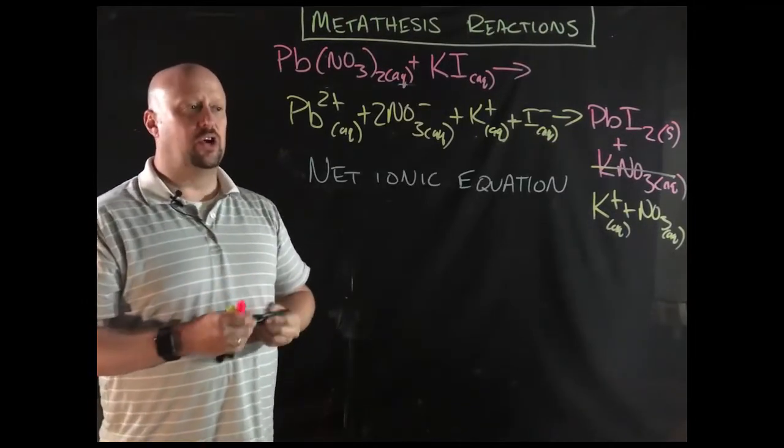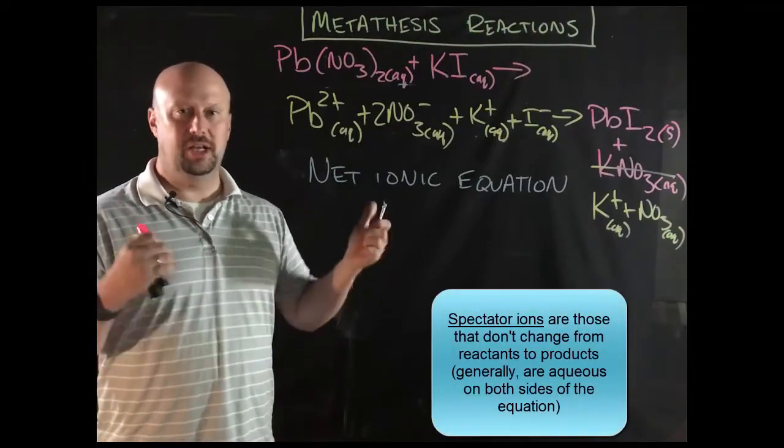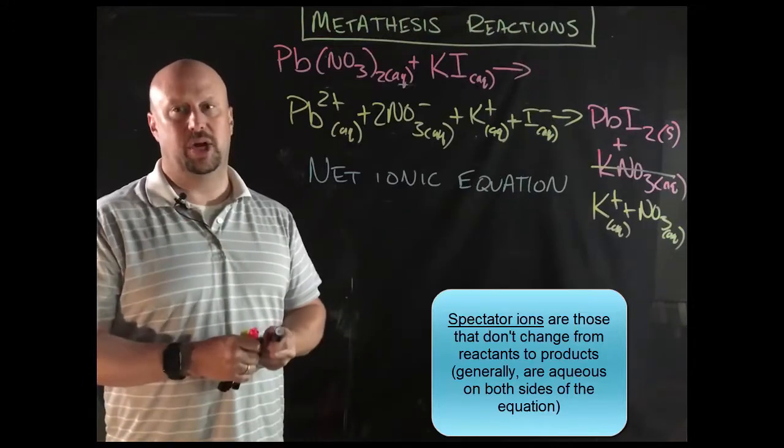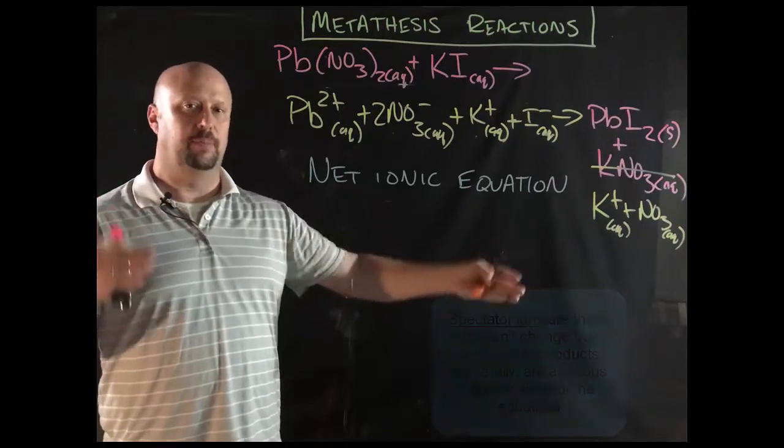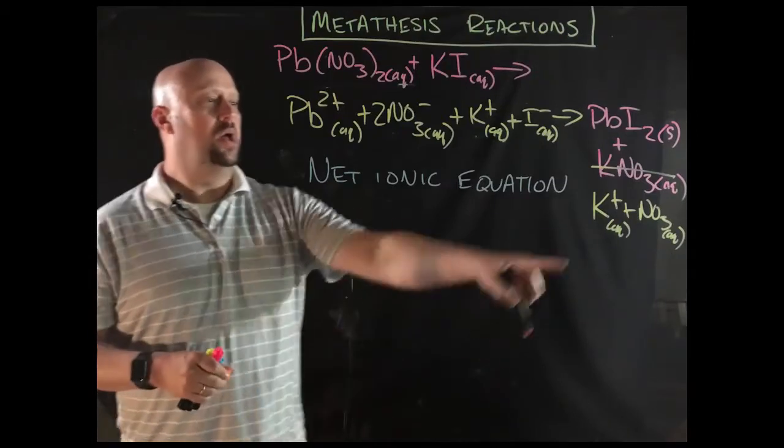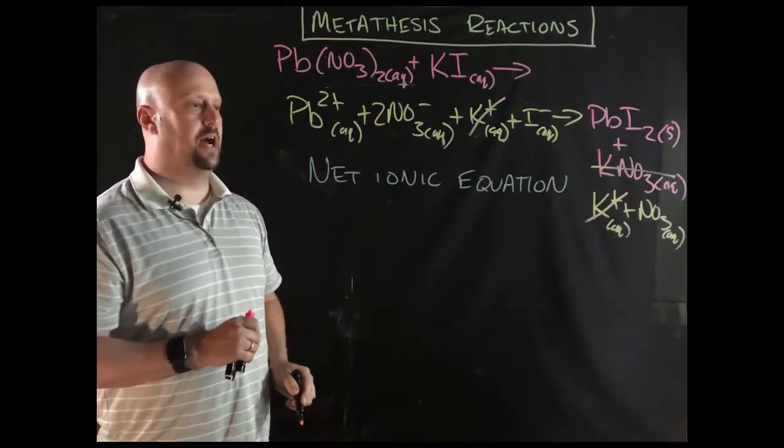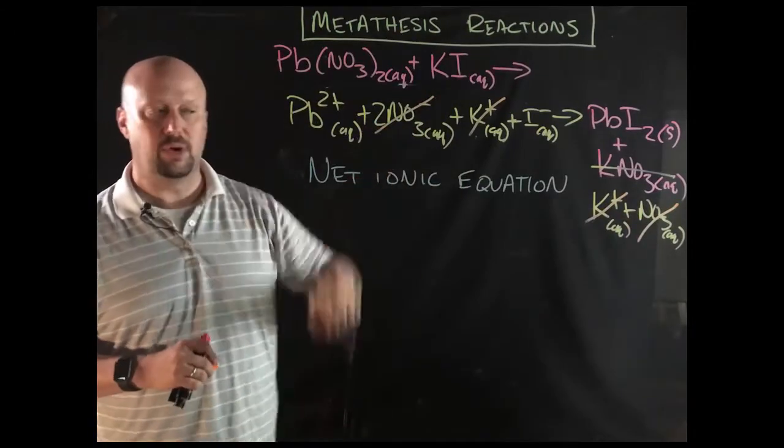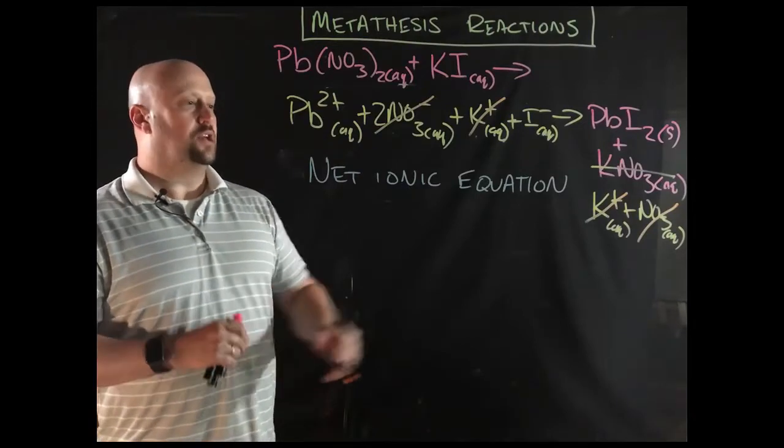The way that you get a net ionic equation is that you cross out all of the spectator ions. So what are the spectator ions? Here's how this works. Spectators are everything that's aqueous on both sides of the equation. We're not going to worry so much about coefficients. We're going to worry about what's aqueous on both sides of the equation. What can I get rid of? And then we're going to write down what's left. Well, potassium is aqueous on both sides of the equation. I'm going to cancel that out. Nitrate, also aqueous on both sides of the equation. Again, I said we're going to ignore that coefficient because I didn't really even need to put it at all. So those are canceled.